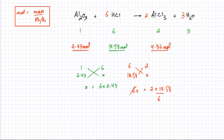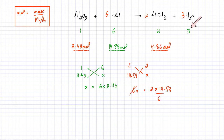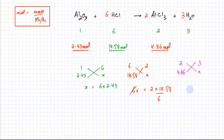Lastly, we need the moles of H₂O. Using the ratio of AlCl₃ to H₂O which is 2:3 — two AlCl₃ produces three H₂O. If I have 4.86 moles of AlCl₃, they produce x moles of H₂O. Cross multiplying: 2x = 3 × 4.86, divide by 2. Calculating: 4.86 × 3 ÷ 2 = 7.29 moles of H₂O.